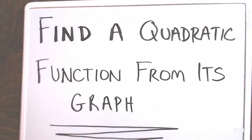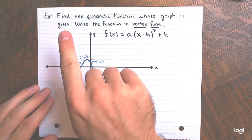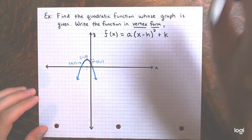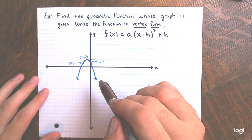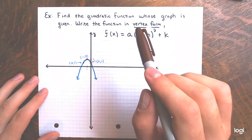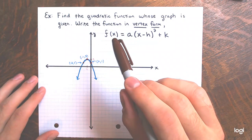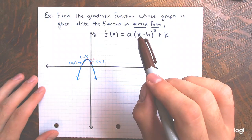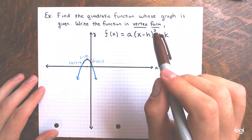My first example is a picture of a parabola that's opening downward. The instructions say: find the quadratic function whose graph is given — find the equation for this parabola. Write the function in vertex form: f(x) equals some number a multiplied by the quantity x minus h, squared, plus k.